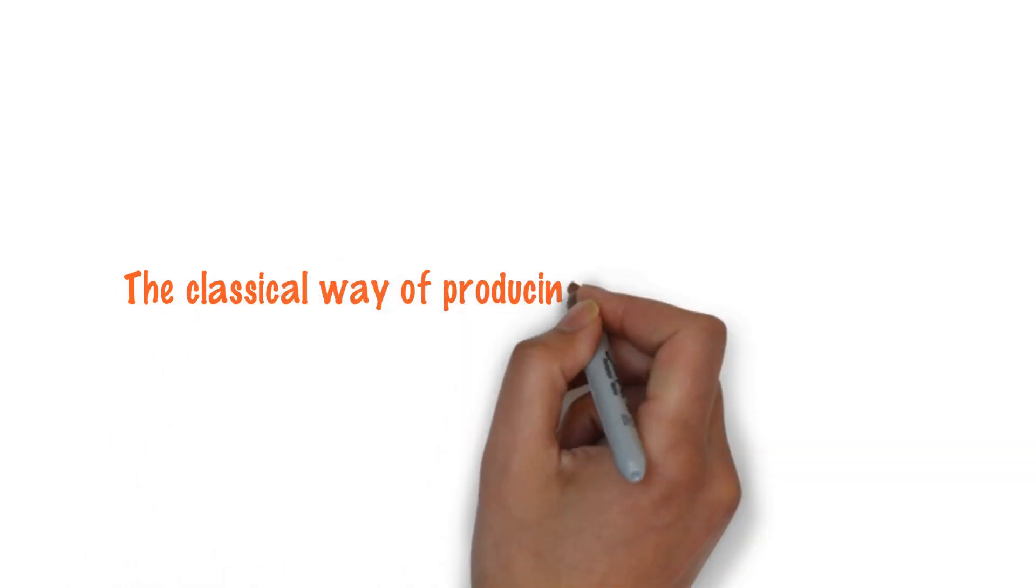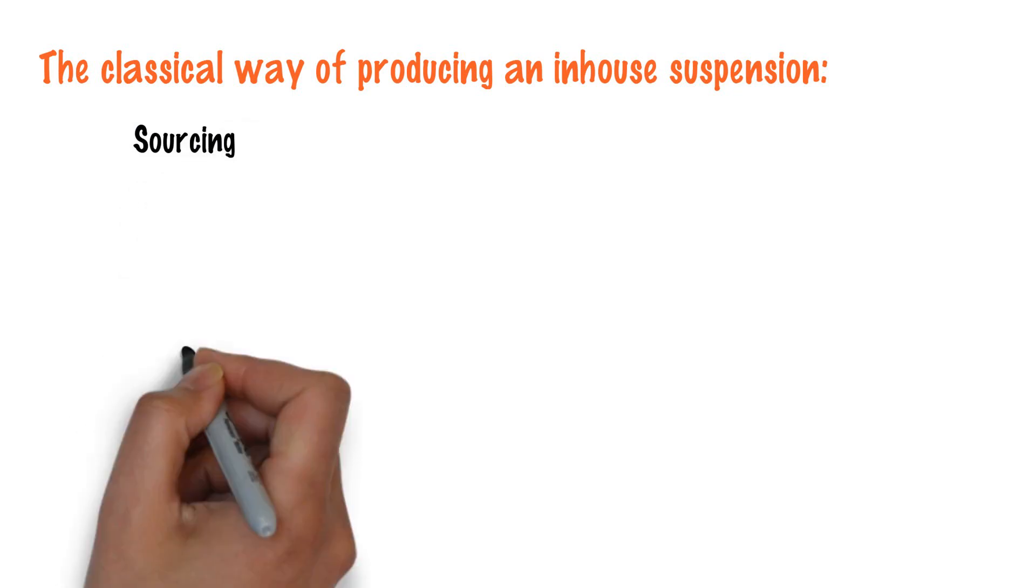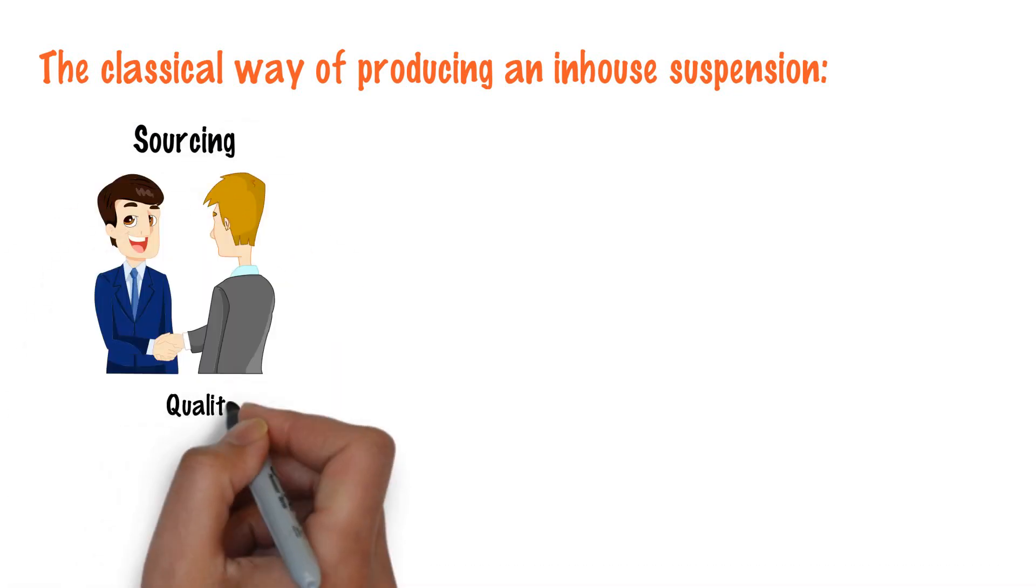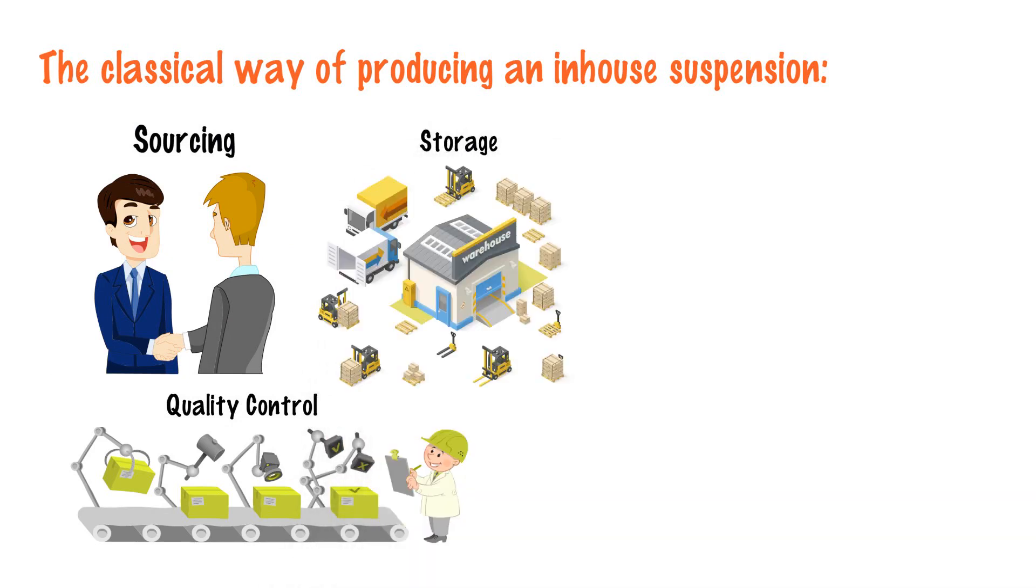The classical way of producing an in-house suspension takes five steps. Sourcing from four to eight raw materials. Quality control of all delivered materials. Storage of four to eight different raw materials.